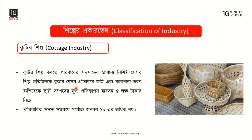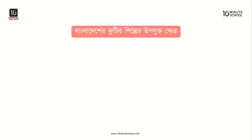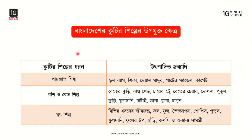Cottage industries typically operate with fewer than five workers and with capital below a certain threshold. Family members participate in production at home. This is how cottage industries are characterized — small scale, home-based, and family-run.